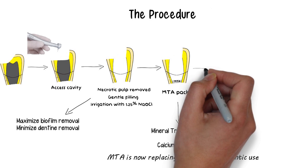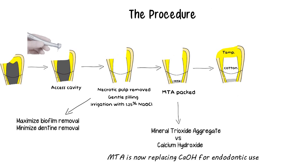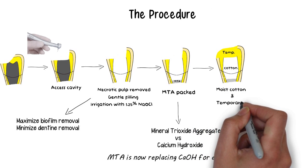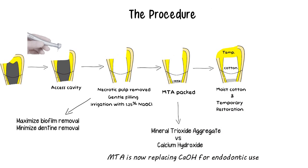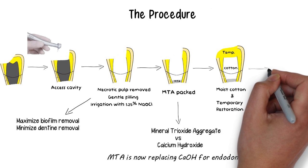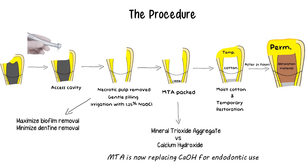Since MTA sets in the presence of moisture, a moist cotton pellet is placed in the canal to ensure setting, and a well-sealed temporary restoration is placed. The patient is recalled when the MTA has set — that is, after at least 24 hours — and if the MTA is set, obturation is completed and the final restoration is placed.